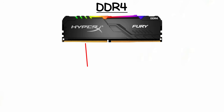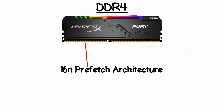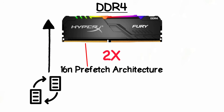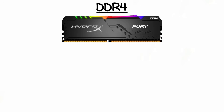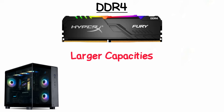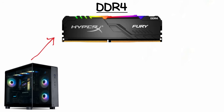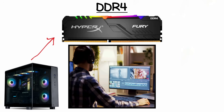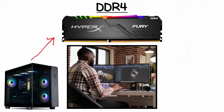DDR4 features a 16-bit prefetch buffer, doubling that of DDR3, allowing higher efficiency when transferring large amounts of data. It also supports larger module capacities, meaning systems can handle more RAM for demanding tasks like gaming, video editing, and 3D rendering.